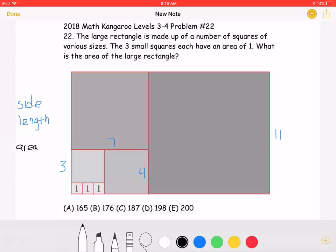This is the 2018 Math Kangaroo Levels 3-4, problem number 22. The large rectangle is made up of a number of squares of various sizes. The three small squares each have an area of 1. What is the area of the large rectangle?